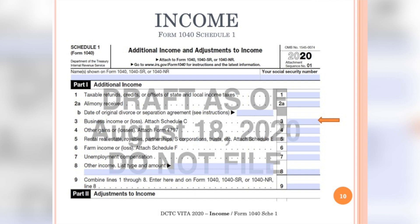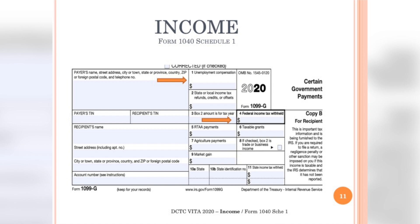Unemployment Compensation is income or benefits derived from the State Workforce Commission. If the taxpayer received unemployment compensation, they should receive Form 1099-G. This form looks very similar to the other 1099s already covered, as well as the Form W-2. The tax preparer should always ensure they are referencing the correct source document for the correct income type. For typical VITA taxpayers, Form 1099-G will only have data in Boxes 1 and 4, covering total unemployment received and federal income tax withheld.